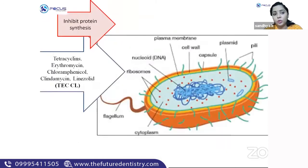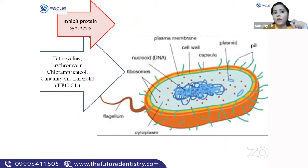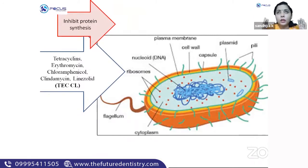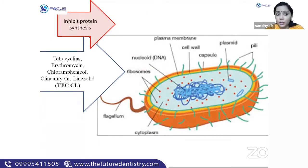The next part is ribosomes. The antibiotics that inhibit protein synthesis are tetracycline, erythromycin, chloramphenicol, clindamycin, and linezolid — the TECH class. You can think of them as a high-energy tech group working all day and night. So TECH: tetracycline, erythromycin, chloramphenicol, then CL — clindamycin and linezolid.